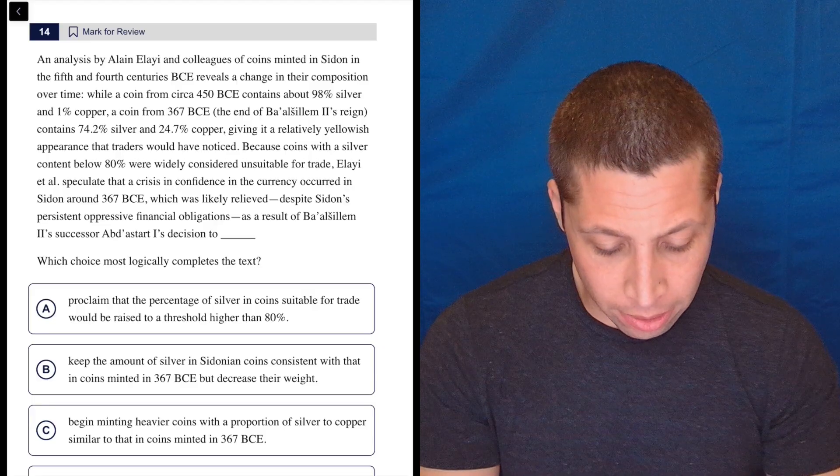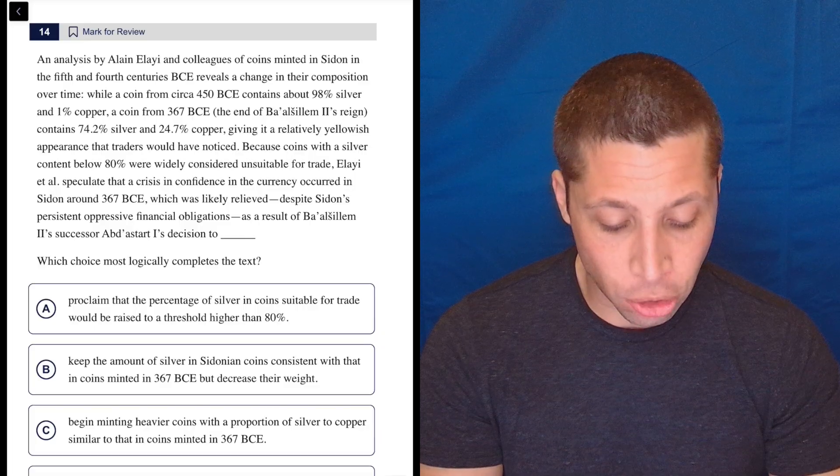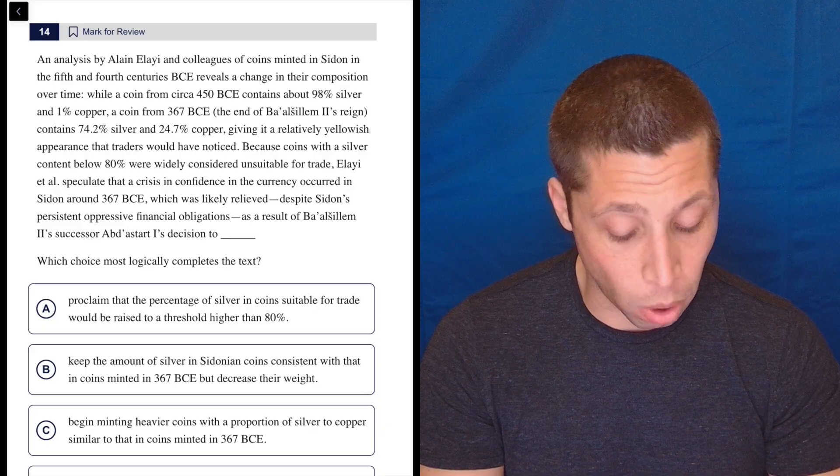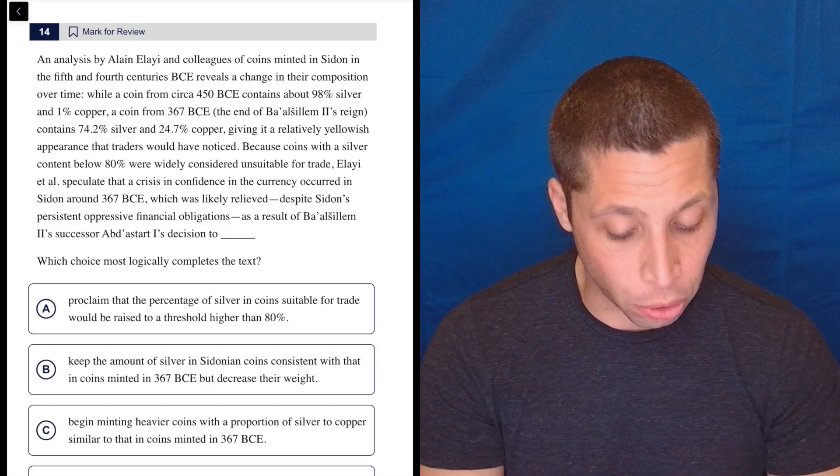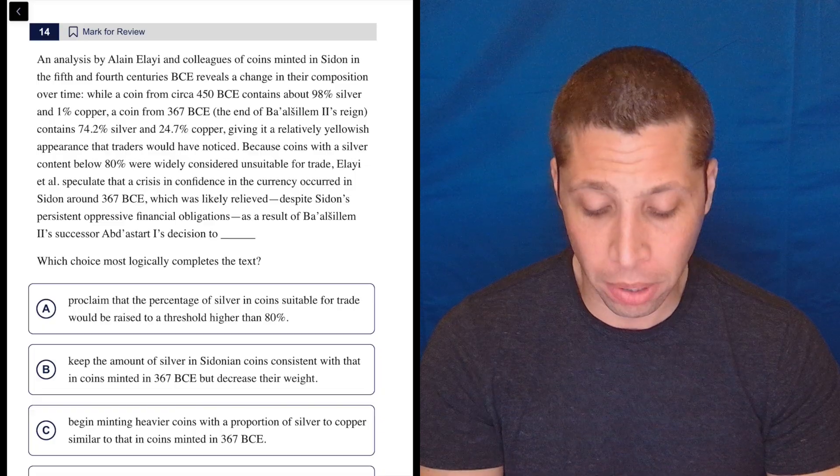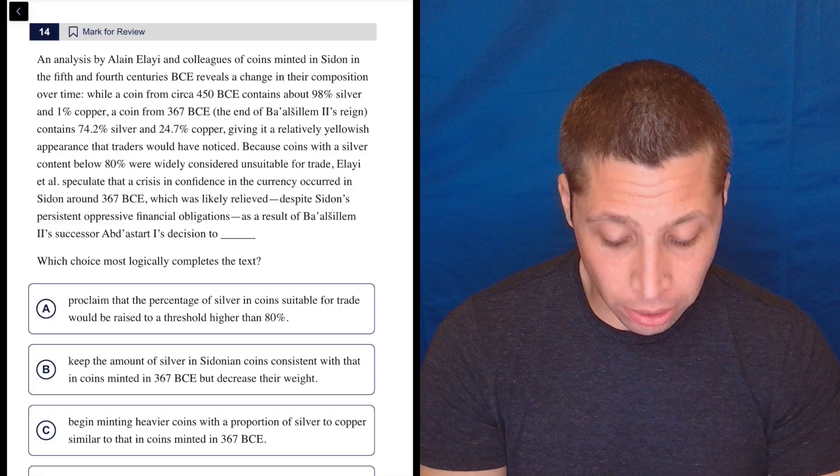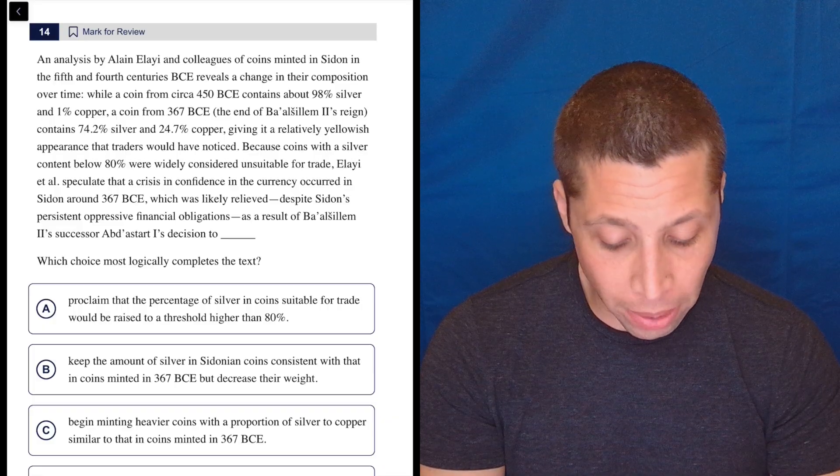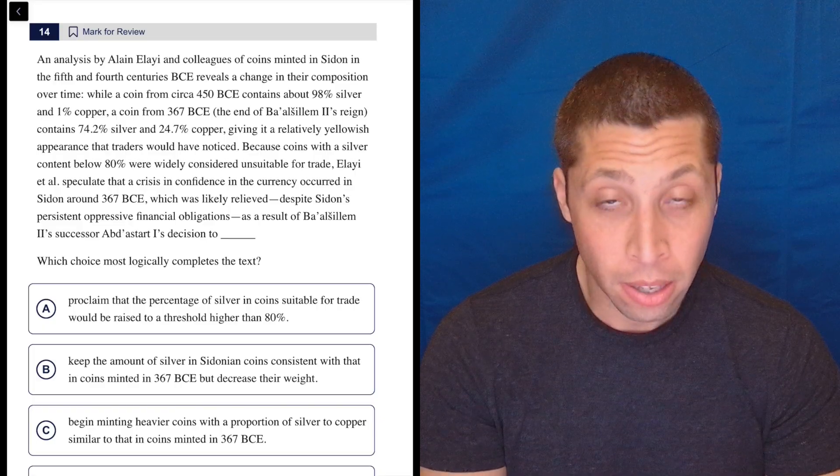An analysis by these people of coins minted in Sidon in the 5th and 4th centuries BCE reveals a change in their composition over time. A coin from circa 450 contains about 98% silver and 1% copper. A coin from 367, the end of this person's reign, contains 74.2% silver and 24.7% copper, giving it a relatively yellowish appearance that traders would have noticed. Because coins with a silver content below 80% were widely considered unsuitable for trade, these people speculate that a crisis in confidence in the currency occurred in Sidon.